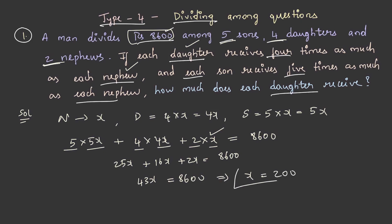We got nephew's amount but it is asking for how much does each daughter receive. Each daughter's share is 4x, so on substituting the value of x here we will be getting the daughter's share. Daughter share is 4 into 200 which is equal to rupees 800.